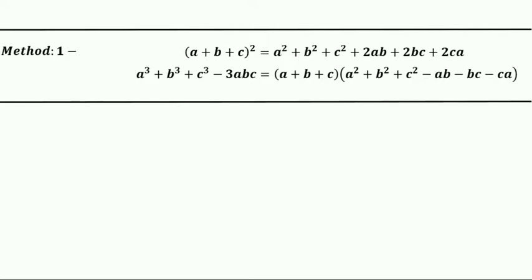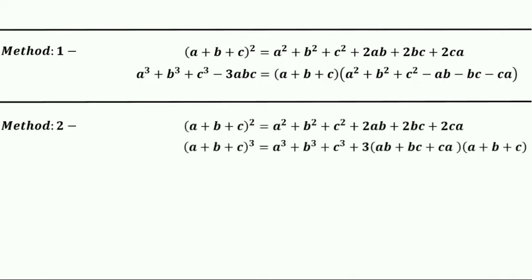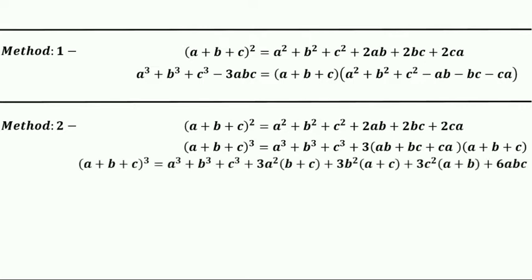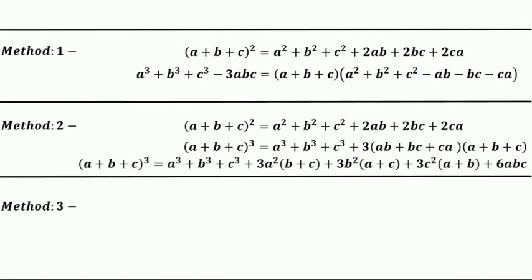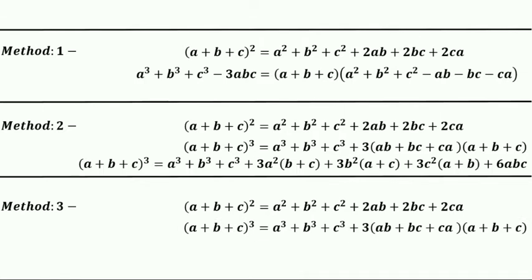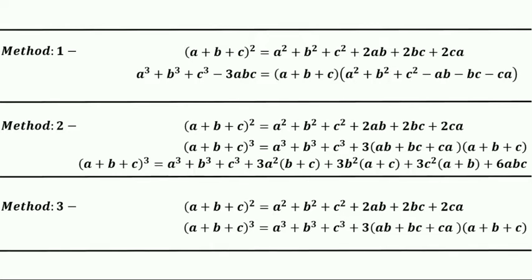In the second method, the identities we are using are (a+b+c)² and (a+b+c)³. In the third method, we also use (a+b+c)² and (a+b+c)³, but I will not show that solution in this video. The solution through the third method is in PDF form and you can download it through the link in the description. The third method is a little bit complicated but it is a very different approach, so you can check it out from the link in the description below.